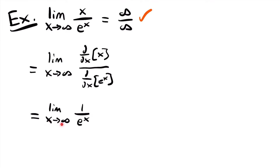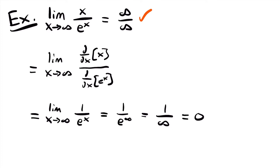As x approaches infinity, the numerator stays at 1 while the denominator increases. If we replace x with infinity, we have 1 divided by e to the power of infinity, which is 1 divided by infinity. A finite number divided by an infinite value equals 0, because that denominator becomes larger and larger and the fraction's decimal value gets closer to 0. So this limit is equal to 0 — the same answer we found before, but found much faster.